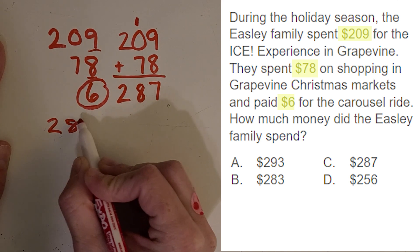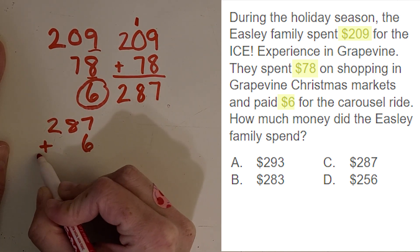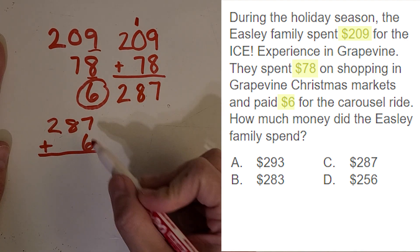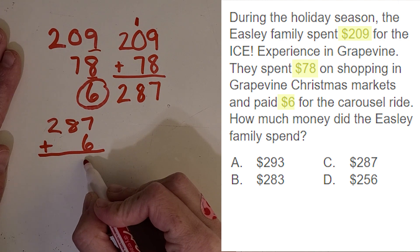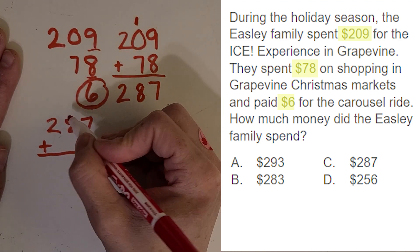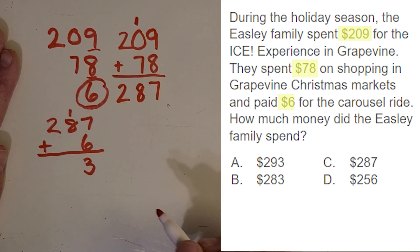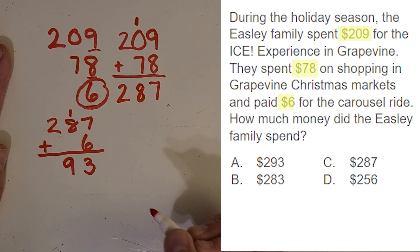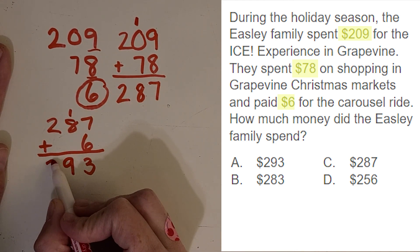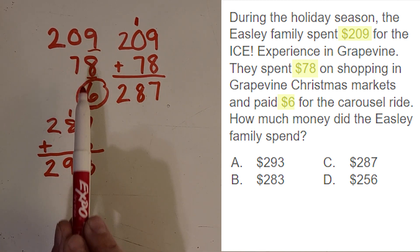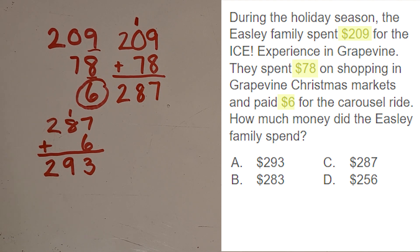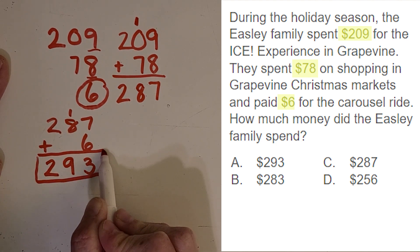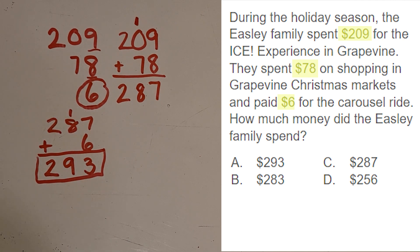So 287 plus the $6. What is 7 plus 6? You got it — 13. Same regrouping as before: I put my 1 over here with the tens. Then 8 plus 1 is 9, and 2 plus nothing is 2. Did we add up all of the prices? Yes, we did — and so we have our total that the family spent. Which answer choice are you going to go with? $293. Great job!